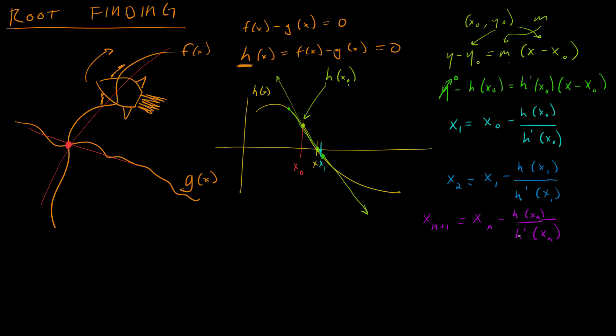And it converges to the answer that you want much, much faster than bisection method. And the reason for that is that every continuous function looks flat if you zoom in enough.